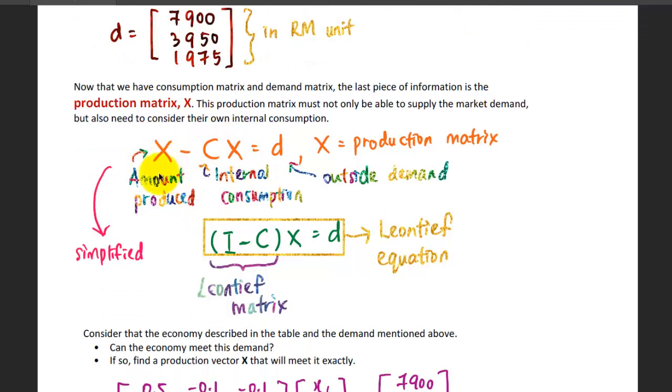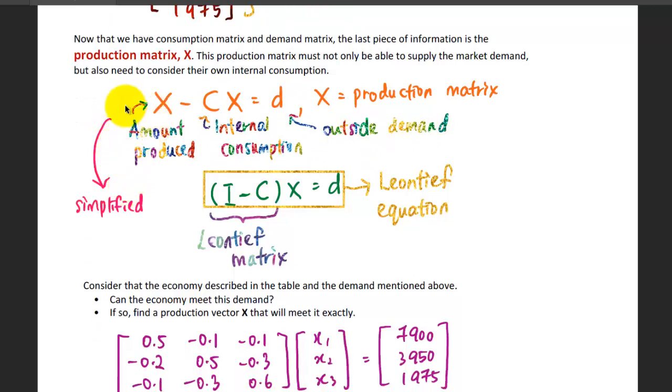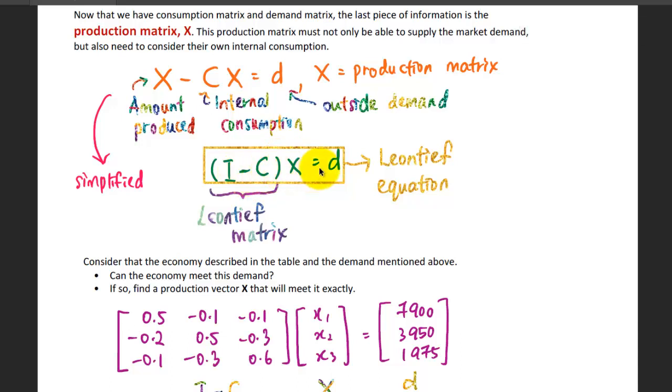X will be the amount to be produced. The CX, the multiplication of the consumption matrix with the production matrix, will show you the internal consumption, whereas D is the outside demand. You can simplify this by factorizing the production matrix X out from this equation. This is the simplest form of the Leontief input-output model equations. We call this equation the Leontief equation, whereas I minus C, the identity minus the consumption matrix, this is the Leontief matrix.